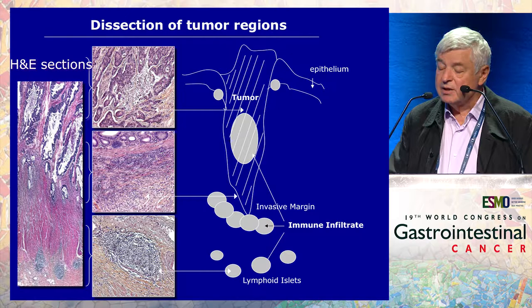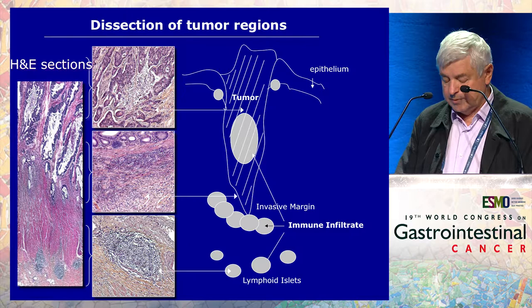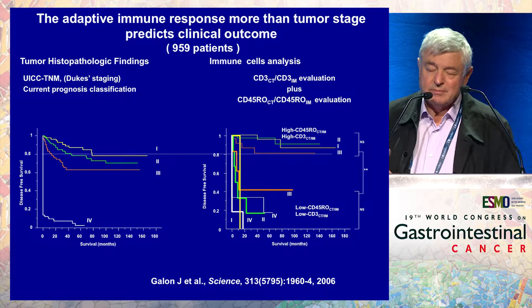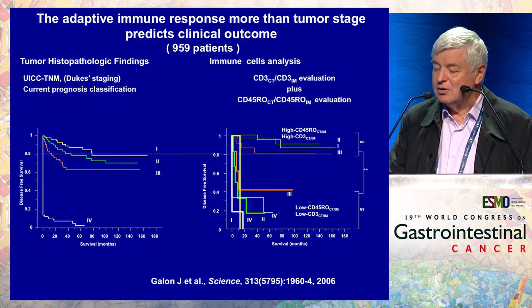This is what one can see in colorectal cancer for lymphocytes. You see that you have lymphocytes at the center of the tumor, and in the invasive margin in these lymphoid islets adjacent to the tumor. What has been really the pivotal paper, more than 10 years ago from our group, that made us look at immune infiltration differently, particularly in colorectal cancer, is the analysis reported here.